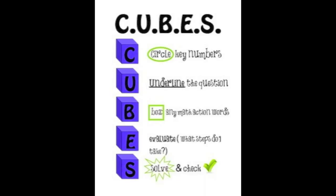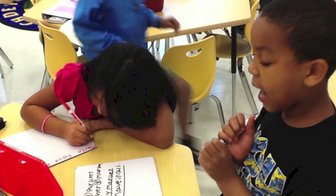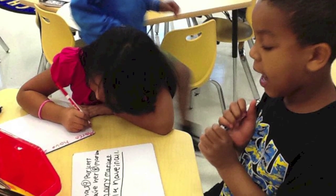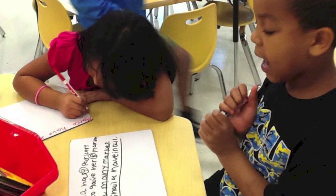U means you need to underline the question — what are you being asked to solve? B is time to box any math action words. These key words will tell you what to do to solve the problem. E means you need to evaluate what steps you should take to solve the problem, and also eliminate any information you do not need. Finally, S — it's time to solve and check. Does my answer make sense? How can I double check my work?